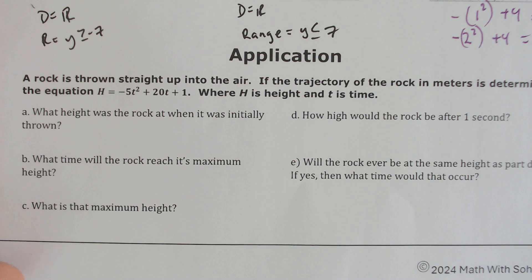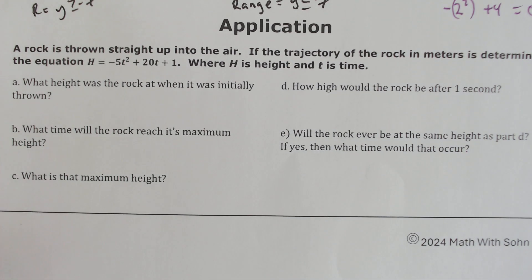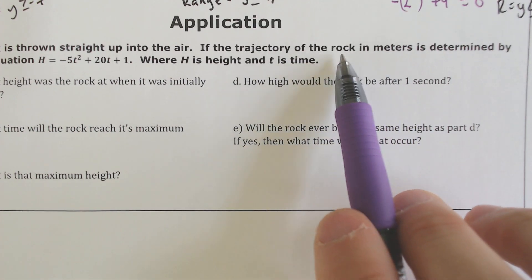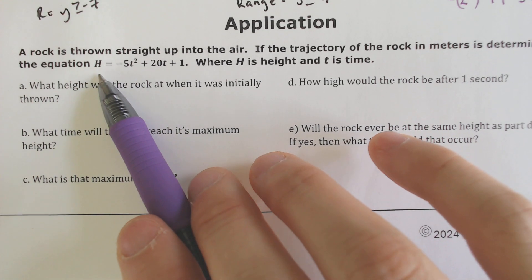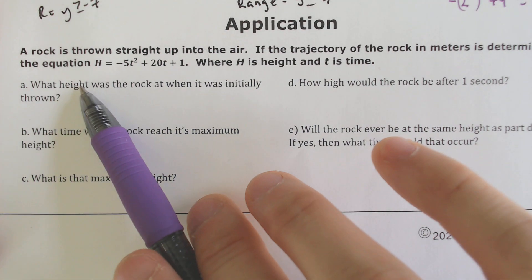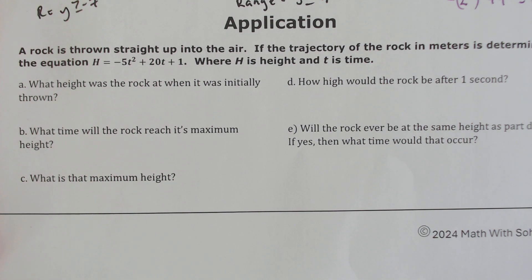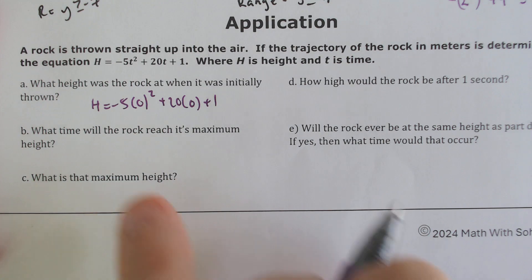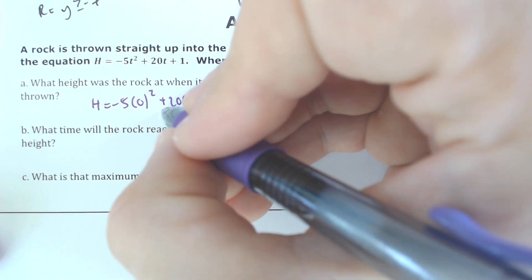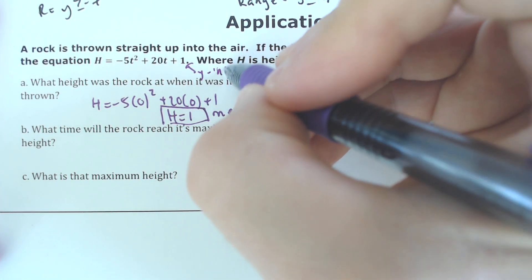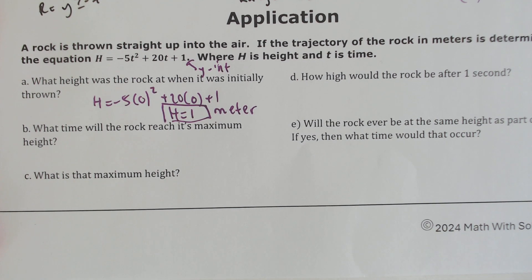The last problem of the day is an application problem. A rock is thrown straight up into the air — if the trajectory of the rock in meters is determined by the equation height equals negative 5t-squared plus 20t plus 1, where h is height and t is time. What is the height when the rock is initially thrown? The initially thrown value would mean that time equals 0, so you just plug in 0 for time. We end up with a value of height equal to 1 — technically 1 meter. This makes sense because at the very beginning, you get your y-intercept, and the y-intercept is your initial value.